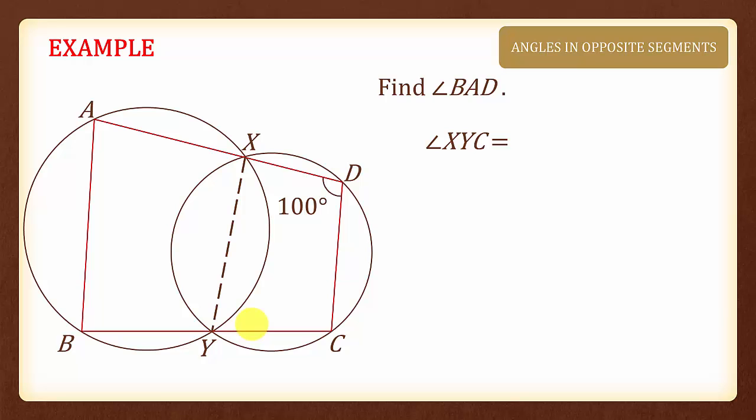angle XYC is equal to 180 degrees minus 100 degrees because of angles in opposite segments, as XDCY is a cyclic quadrilateral. And we will have 80 degrees.